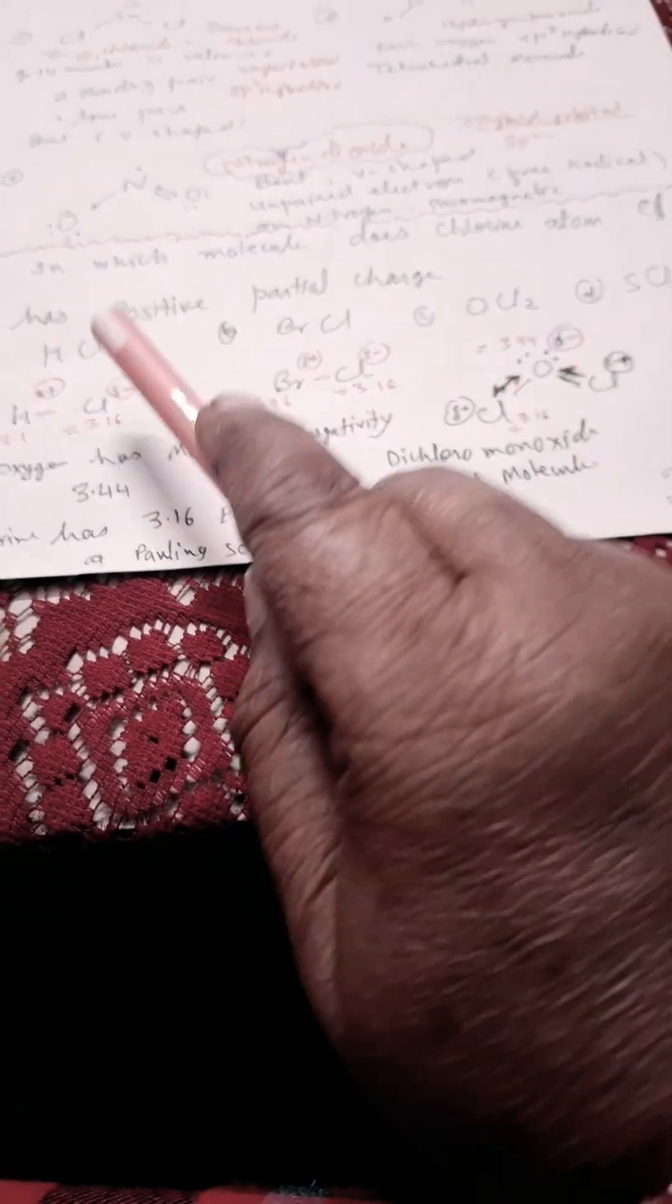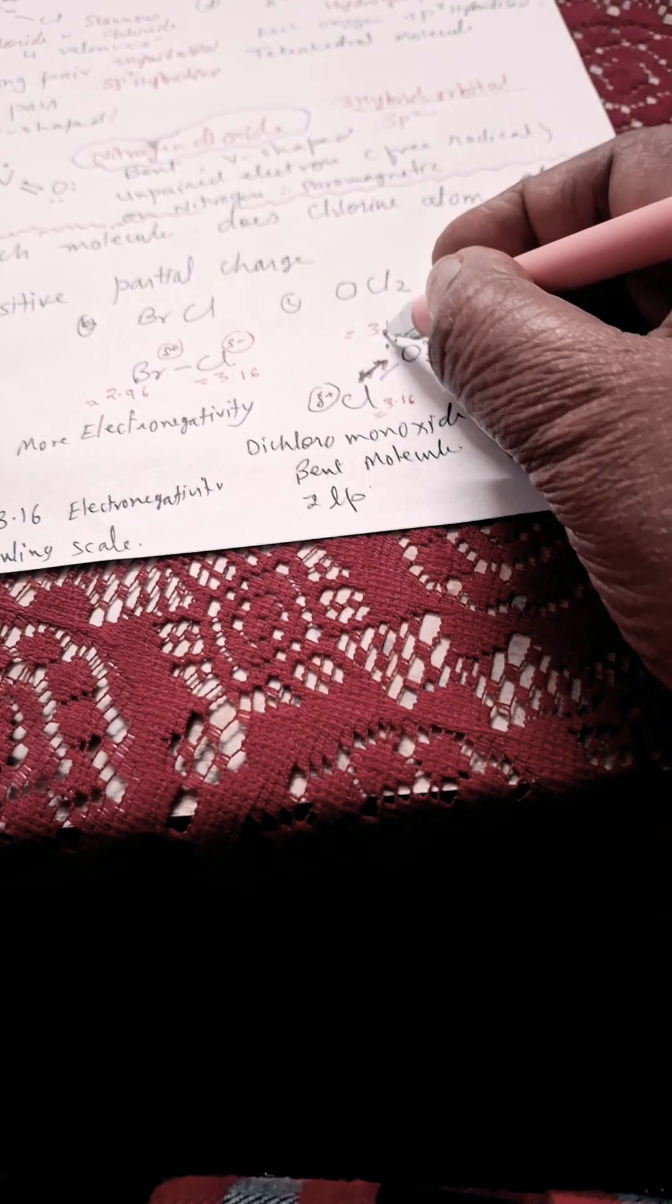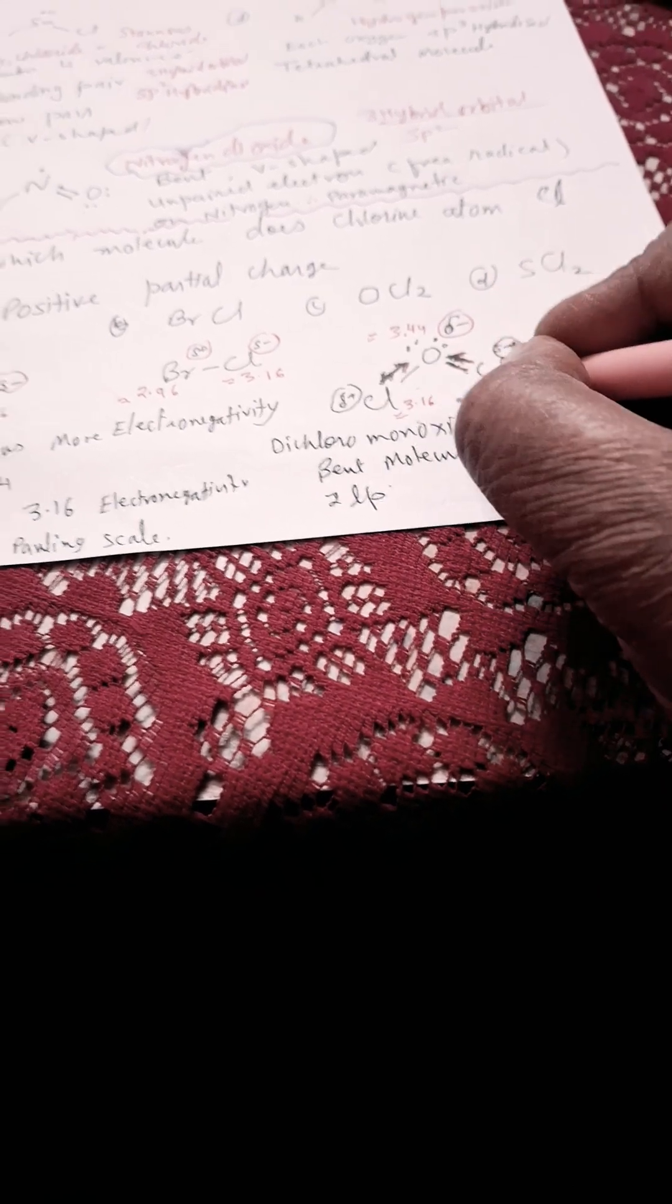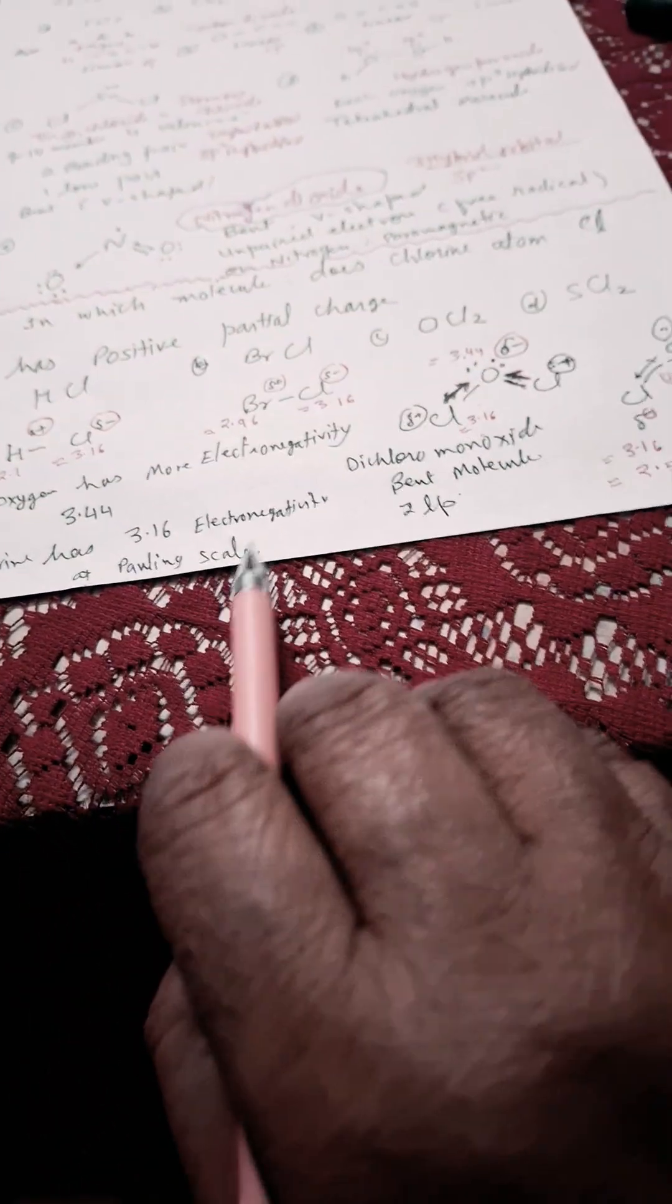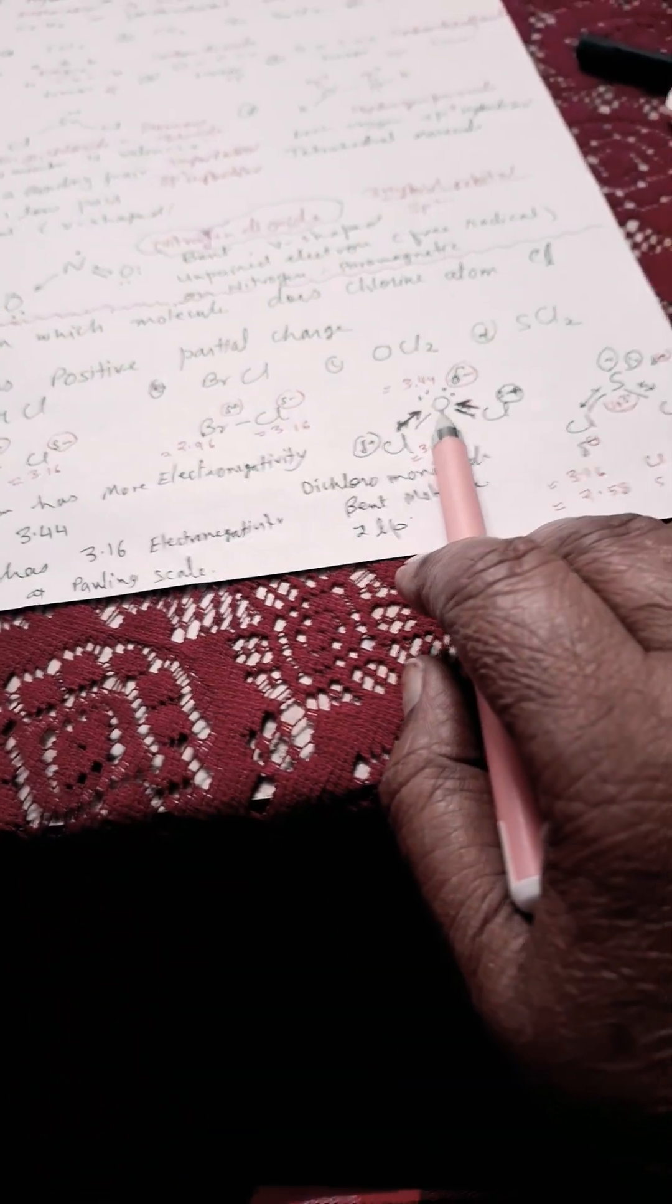Now in which molecule is the chlorine atom having partial positive charge? SCl, no. BrCl, no. OCl2, yes. Oxygen is 3.44 and this chlorine is having 3.16 according to Pauling scale. So electronegativity in this case, OCl2.